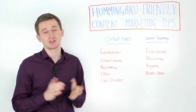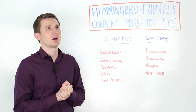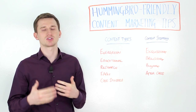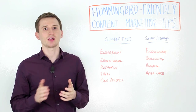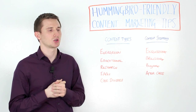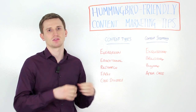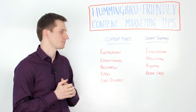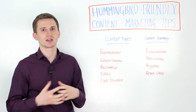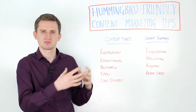FAQs are notoriously hard to rank on their own. FAQs generally revolve a lot around company issues and company questions. A good idea to make them more Hummingbird-friendly would be to look at your FAQs and start to address industry-specific or sector-specific queries and questions. This will enable Google to provide a lot more context around the industry and sector that you're within, rather than just company-specific issues.